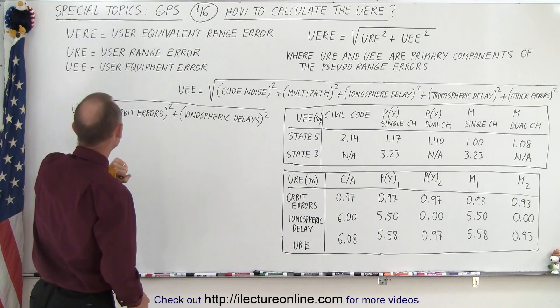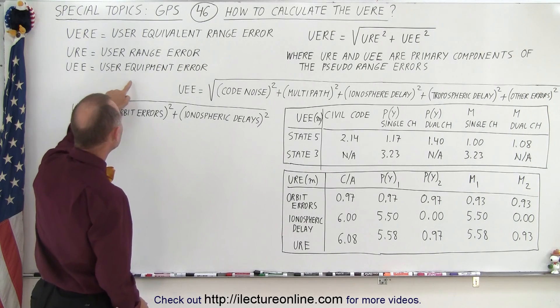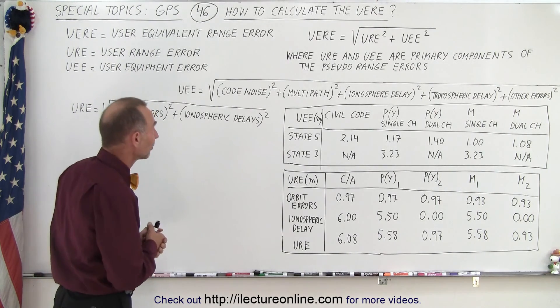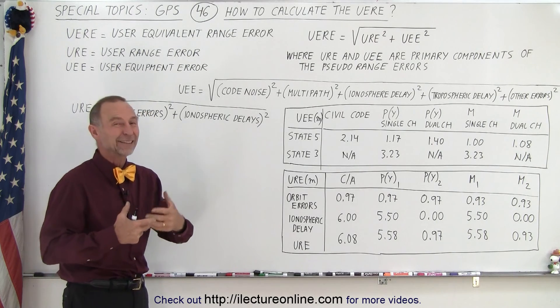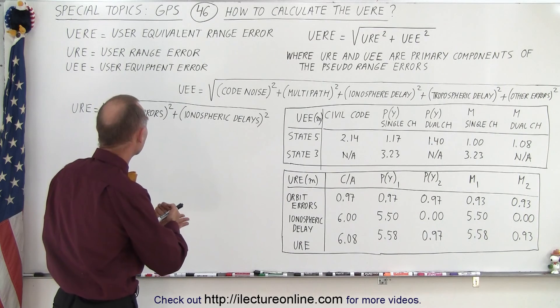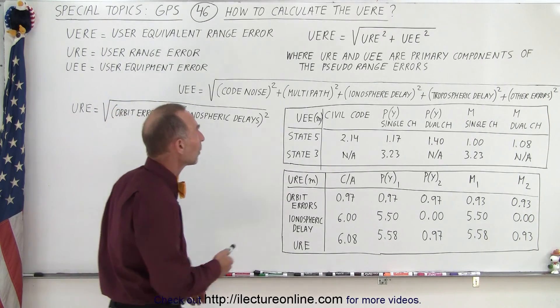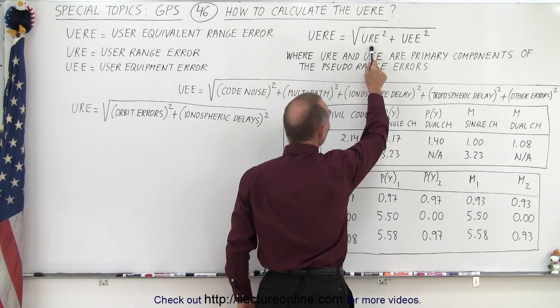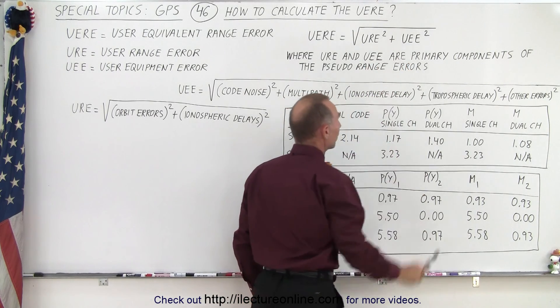But essentially, it's the Range Error, and then the UEE is the Equipment Error. And again, they put the word User in there for whatever reason. I guess they always want acronyms of at least three letters. So it's the Range Error and the Equipment Error, and how it's calculated is it's equal to the square root of the Range Error squared plus the Equipment Error squared.